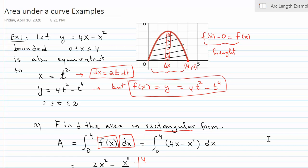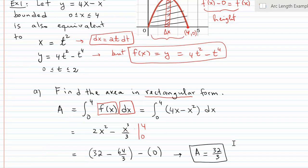Since I know the integral in rectangular form is the integral from 0 to 4, the height which is f(x) translates into 4x minus x squared, dx. I'll let you go through the work yourself — it's pretty easy to follow. I would recommend you pause the video and work through it to see if you get 32/3 for the answer.